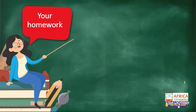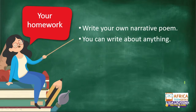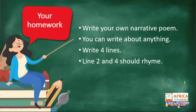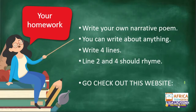Don't go anywhere — we still need to discuss what we're going to do tomorrow. But for your homework, I want you to write your own narrative poem. You can write about anything; you only have to write four lines, and try to make lines two and four rhyme. You can take a screenshot or find this homework on the school's website. Write about something that happened — maybe something during lockdown.